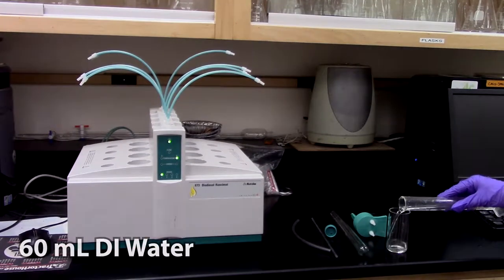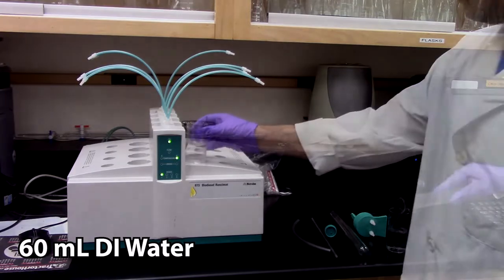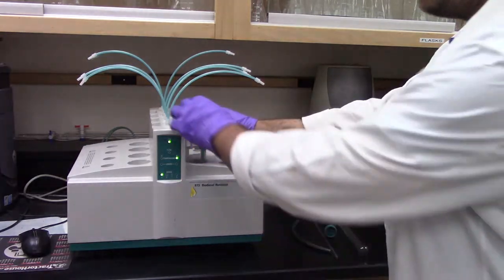To begin, fill the clear glass vessel with 60 milliliters of DI water and place it in the machine, attaching it as demonstrated here.